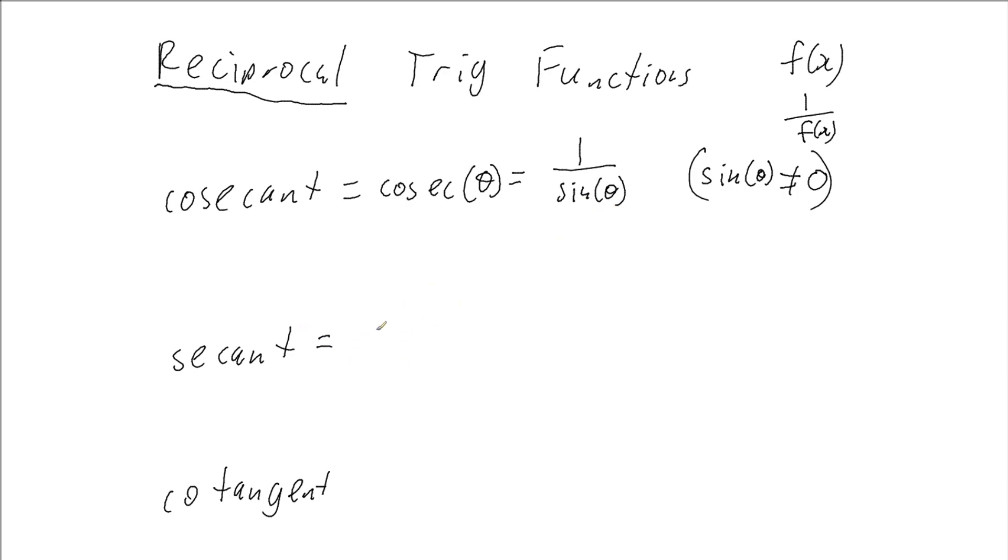Secant is shortened to sec, and it's defined as 1 over cos of our angle. And just like with sine, it is not defined when cos is zero.